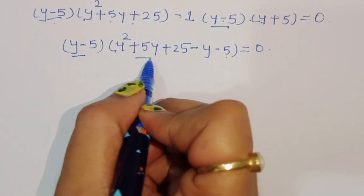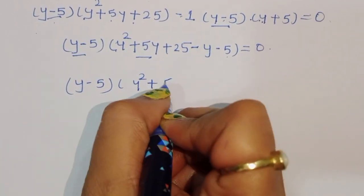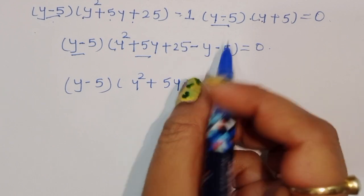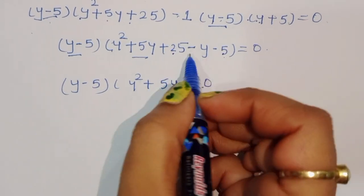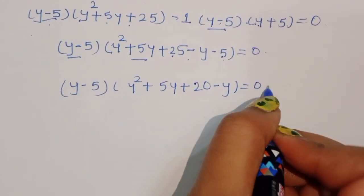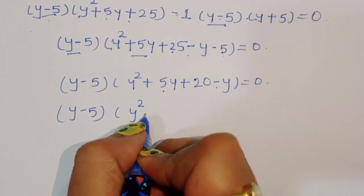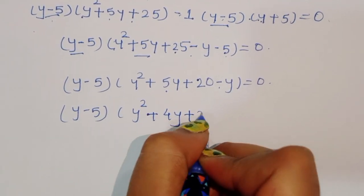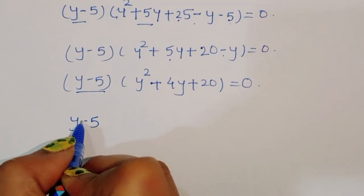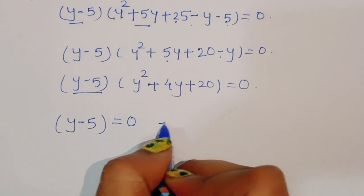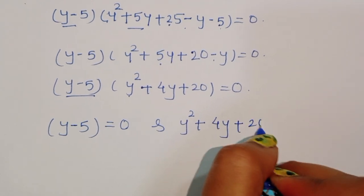We take y minus 5 as a common factor. After factoring, the remaining bracket is y squared plus 5y plus 25 minus (y plus 5), which simplifies to y squared plus 5y minus y plus 25 minus 5, giving y squared plus 4y plus 20. So we have y minus 5 times y squared plus 4y plus 20 is equal to 0.